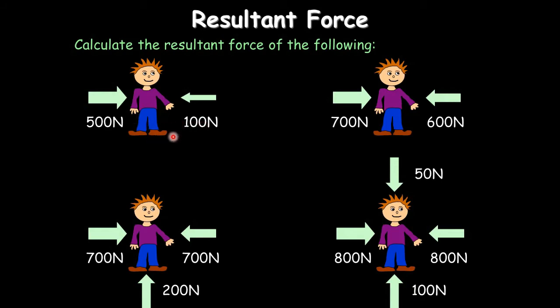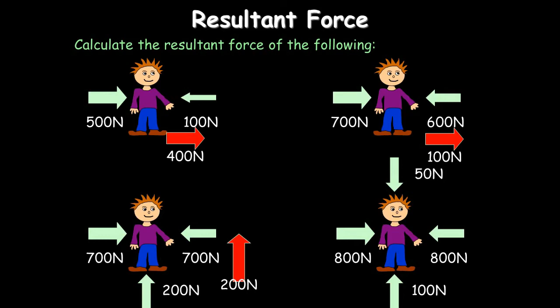Resultant forces are quite easy — consider the size of force in each direction. If one force is bigger, subtract one from the other; the resultant force here would be 400 newtons that way. In the second example, the difference is 100 newtons. With more than one direction, two 700s cancel out left-right, but the object moves upward with a force of 200 newtons. That's what's meant by resultant force.